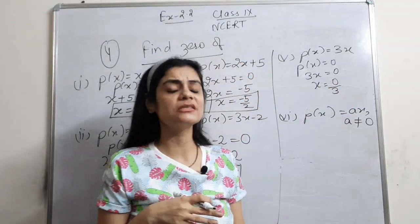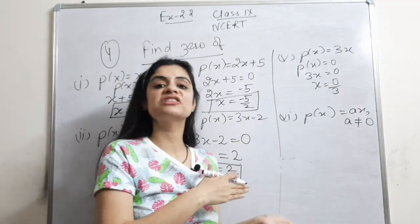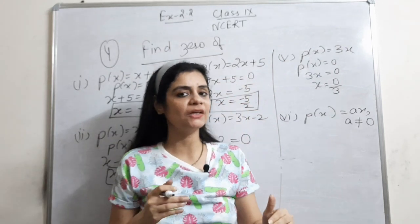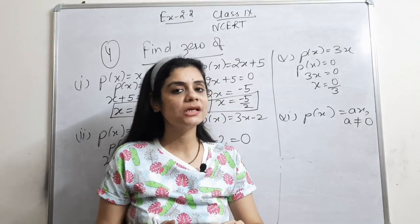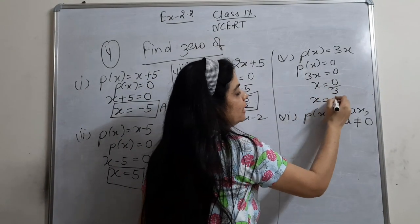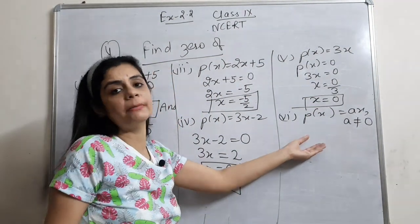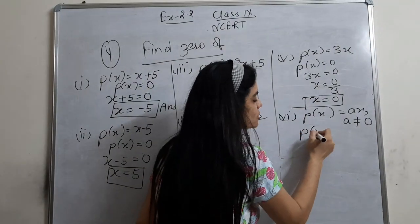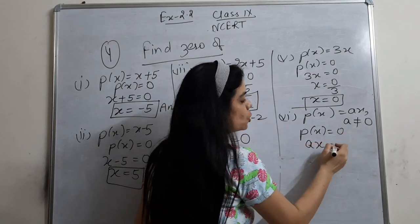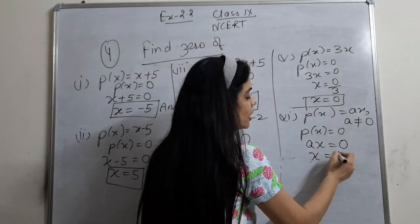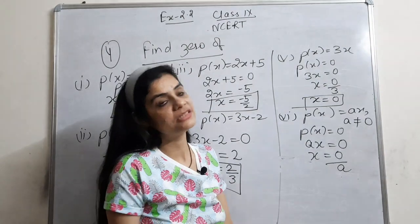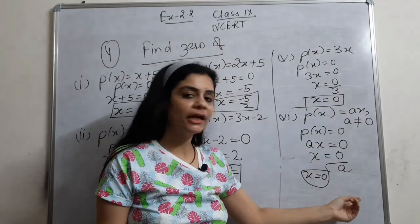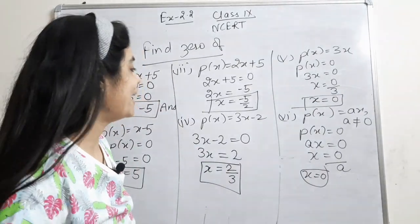Remember: zero divided by something is zero; something divided by zero is infinity. So 0/3 = 0. Similarly for p(x) = ax: set ax = 0, so x = 0/a, which is again zero. Students sometimes get confused by these but they are similar — a goes to the denominator and zero divided by something is zero.